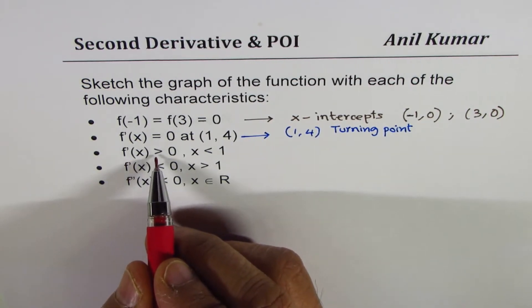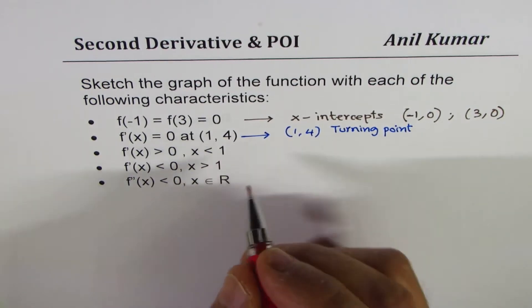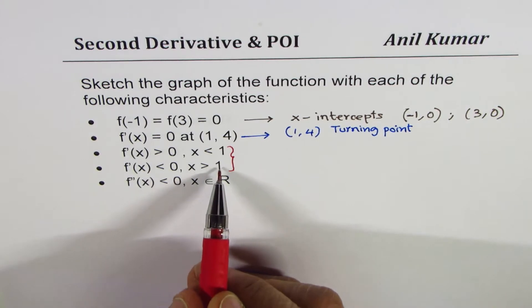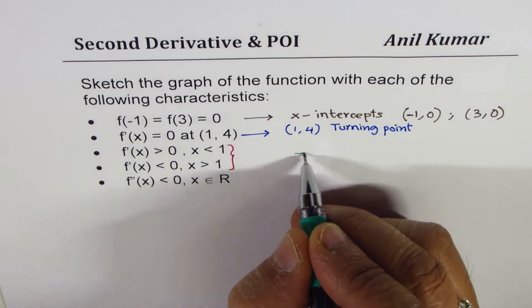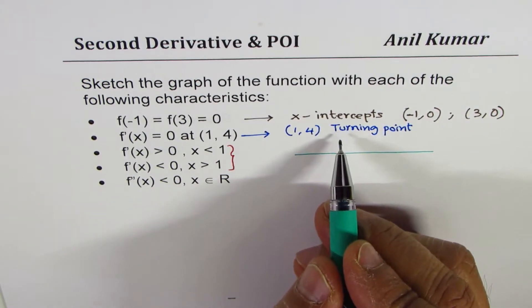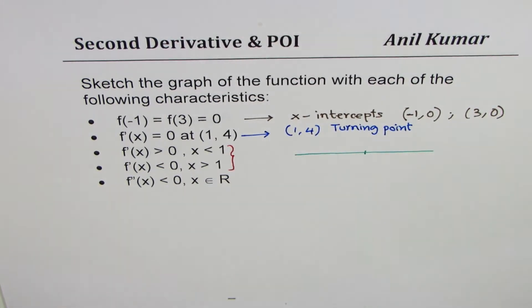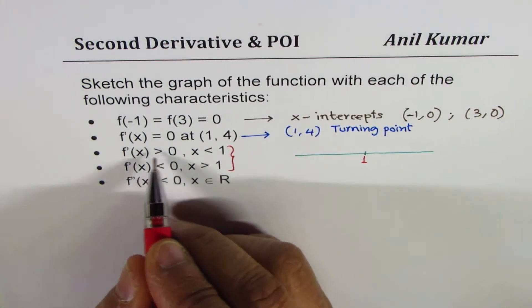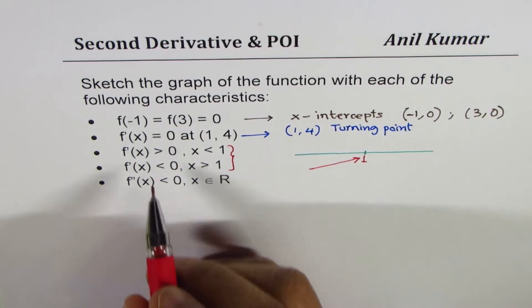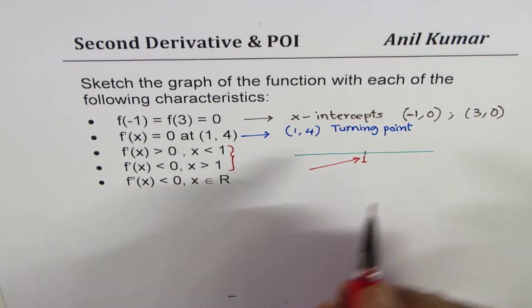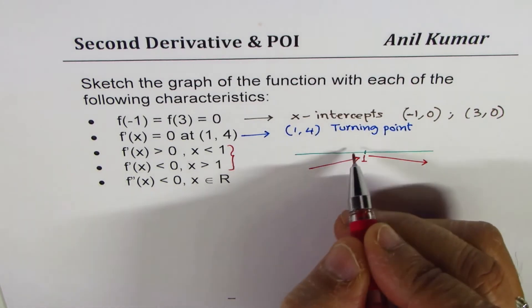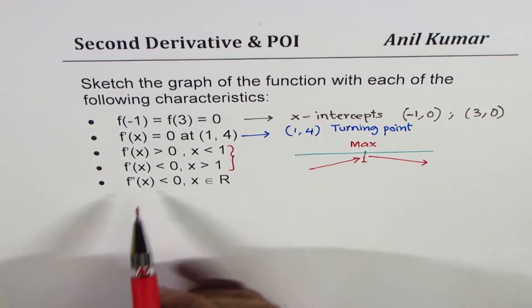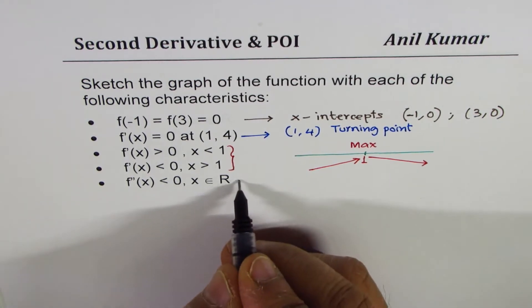The next conditions say: first derivative is greater than 0 when x is less than 1, and first derivative is less than 0 when x is greater than 1. This tells us whether the function has a maximum or minimum at x=1. Since the function is increasing to the left of 1 and decreasing to the right, that means at x=1 we have a maximum.